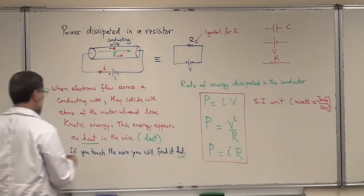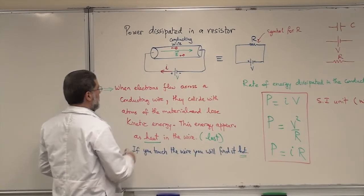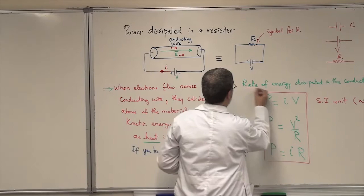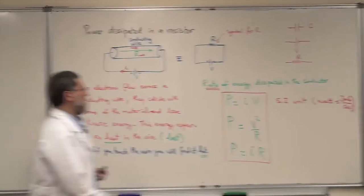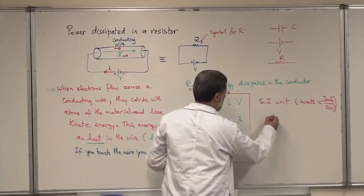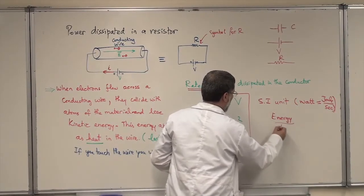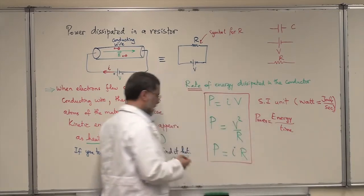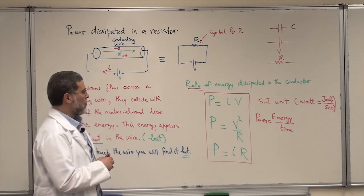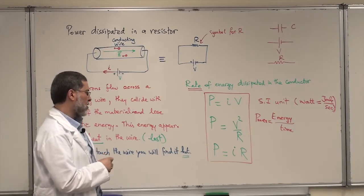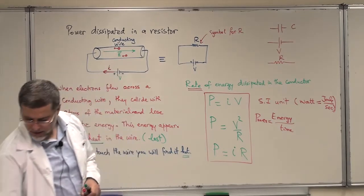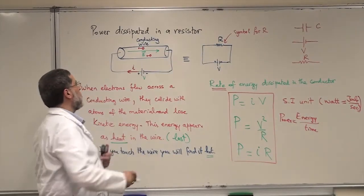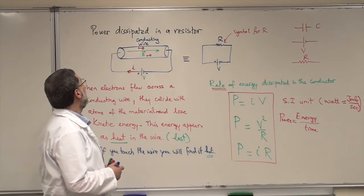The watt is energy in joules over seconds, because we're talking about rate. The power dissipated is the rate of energy dissipated — energy over time — and it's either IV, V squared over R, or I squared R, depending on what you are given in your problem when solving problems related to power dissipated.